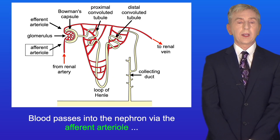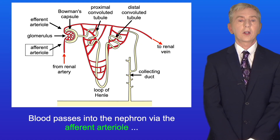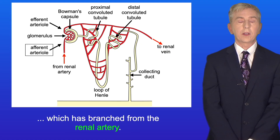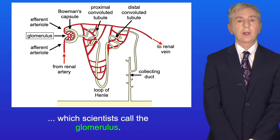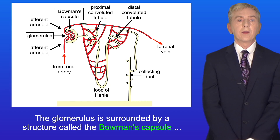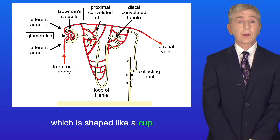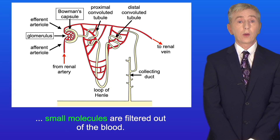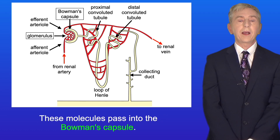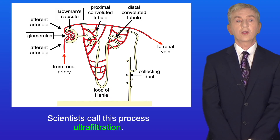Blood passes into the nephron via the afferent arteriole, which has branched from the renal artery. This then splits into a dense network of capillaries which scientists call the glomerulus. The glomerulus is surrounded by a structure called the Bowman's capsule, which is shaped like a cup. When the blood passes through the glomerulus, small molecules are filtered out of the blood and these molecules pass into the Bowman's capsule — scientists call this process ultrafiltration.